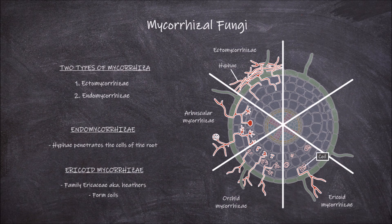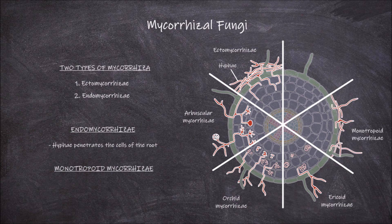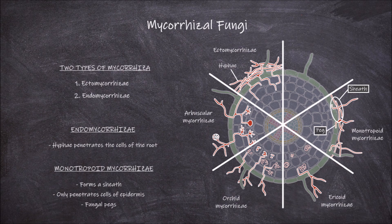The next form of endomycorrhizae is the monotropoid mycorrhizae. In this type a sheath is formed, but the penetrating hyphae only penetrate into the cells of the epidermis. These penetrating hyphae are called fungal pegs.